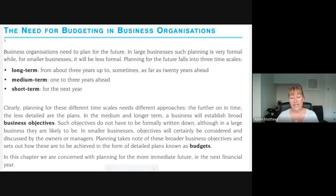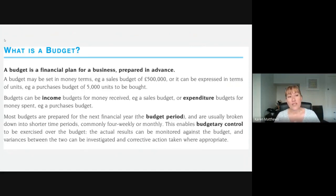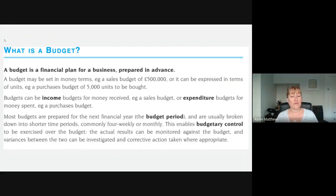So we'll be drawing up budgets for cash, for production, for labour, sales, purchases, any number of things. A budget is simply a financial plan for the business prepared in advance. As a financial plan, it doesn't always have to be in monetary terms. We could look at a budget in terms of number of units to sell, buy, or make, or the number of hours required for labour. Nine times out of ten it will be monetary, though.